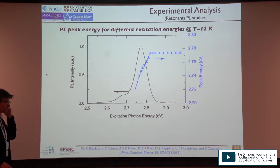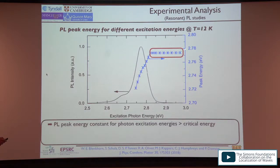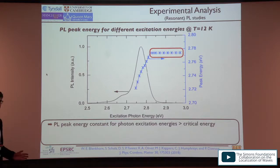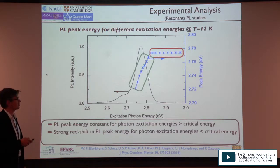Looking at PL spectra measured as a function of photon excitation energy: when the excitation energy is well above the band gap, the PL spectrum and peak energy remain essentially unchanged as the excitation energy is reduced. However, once you hit a critical energy — bringing the photon excitation energy within the PL spectrum — the PL peak energy and spectrum start to change significantly, with the PL peak energy beginning to decrease.